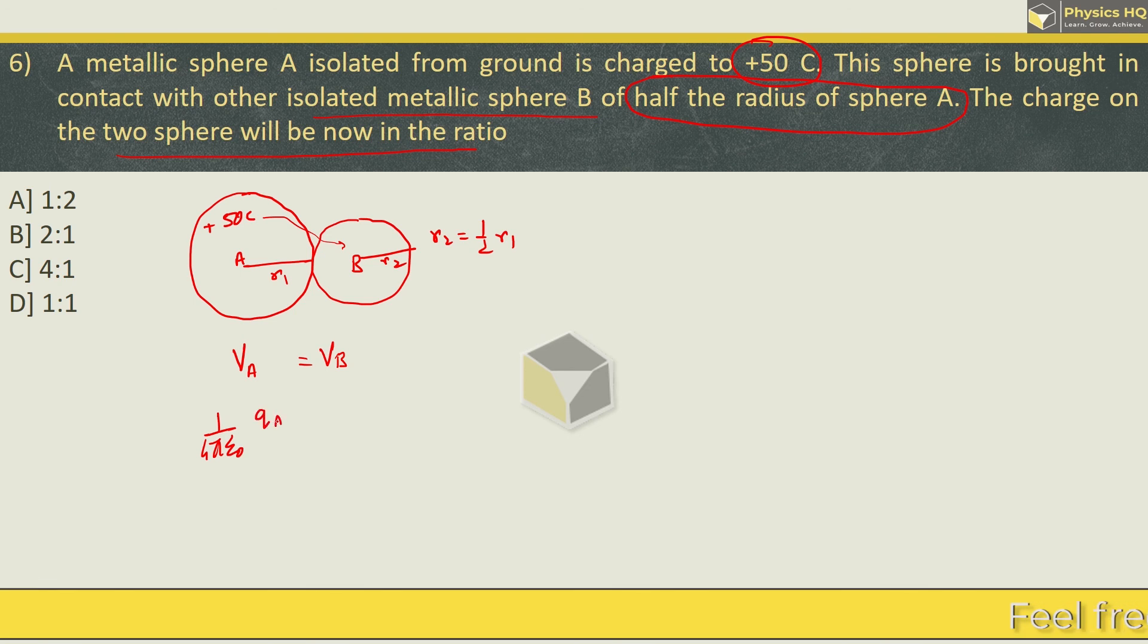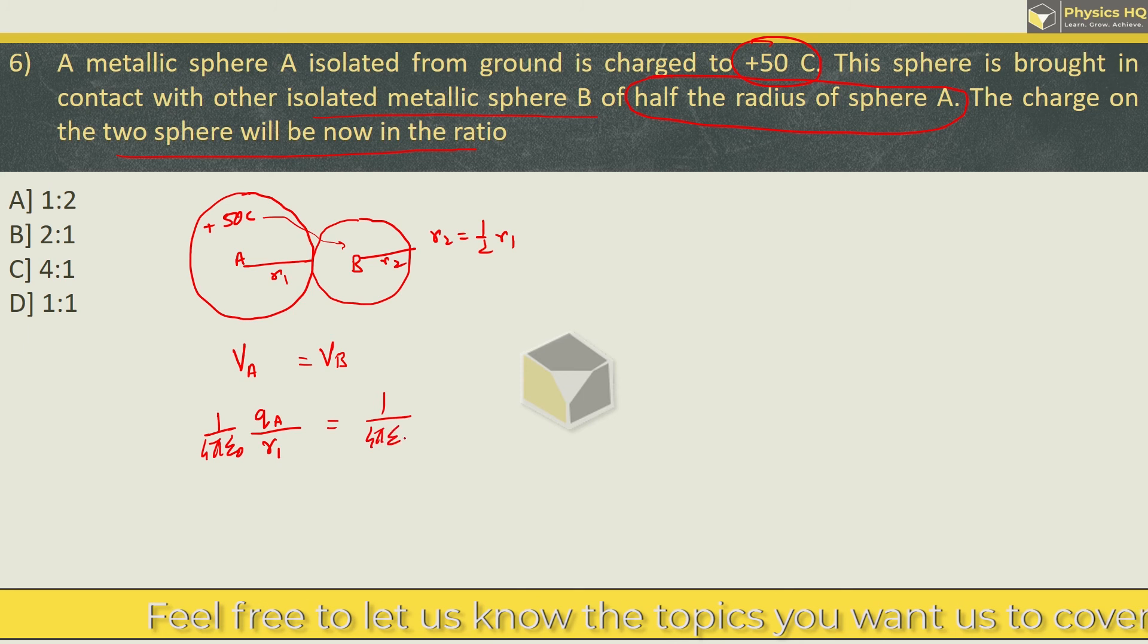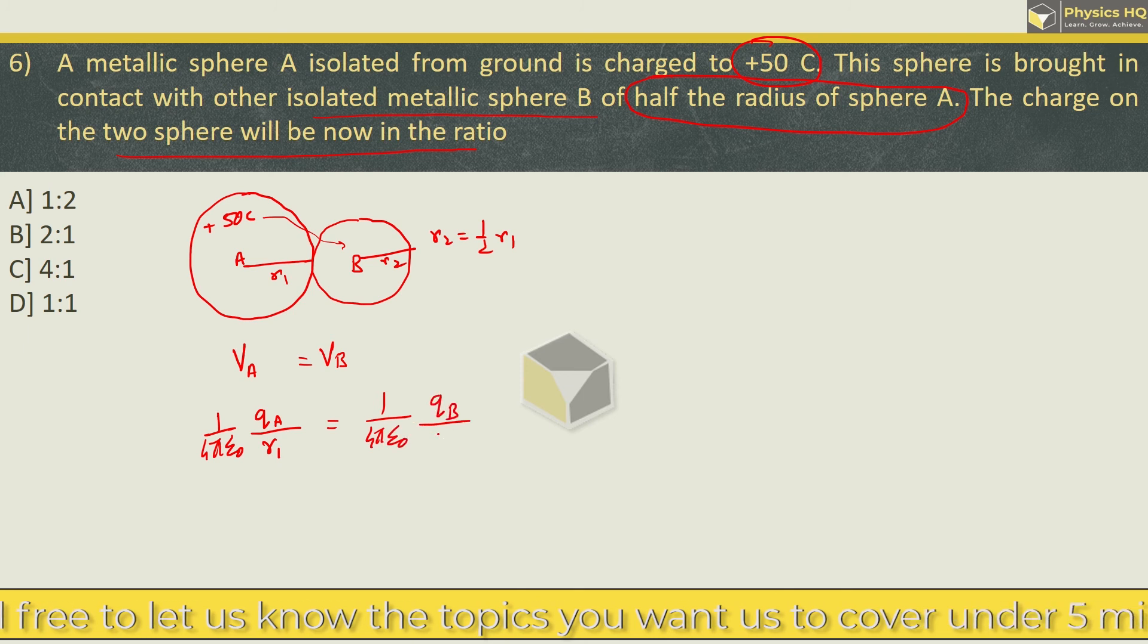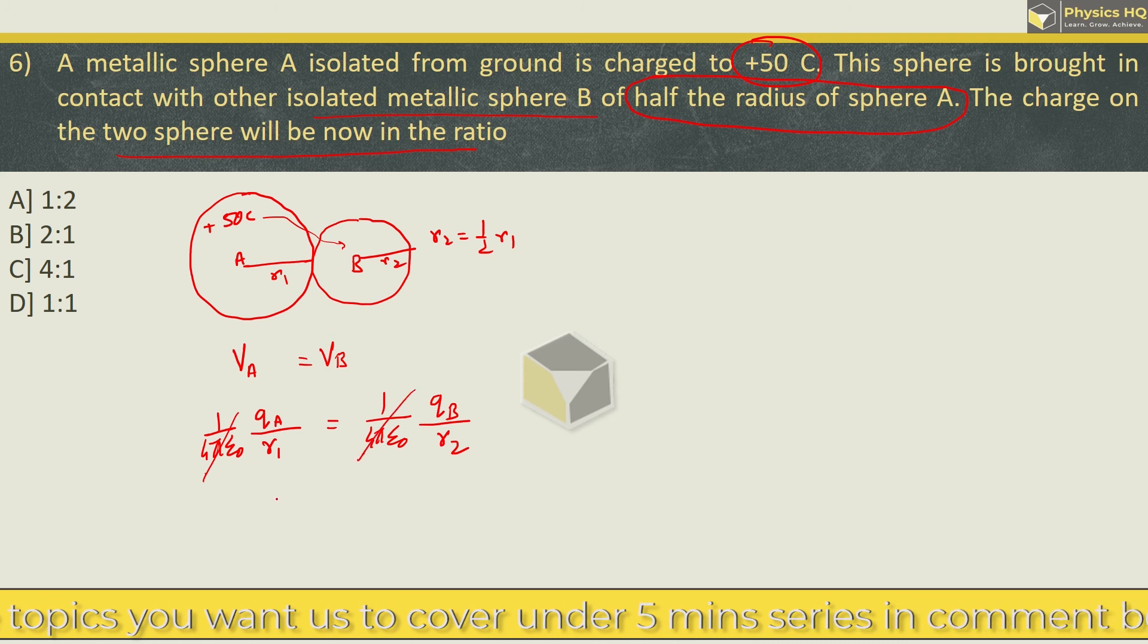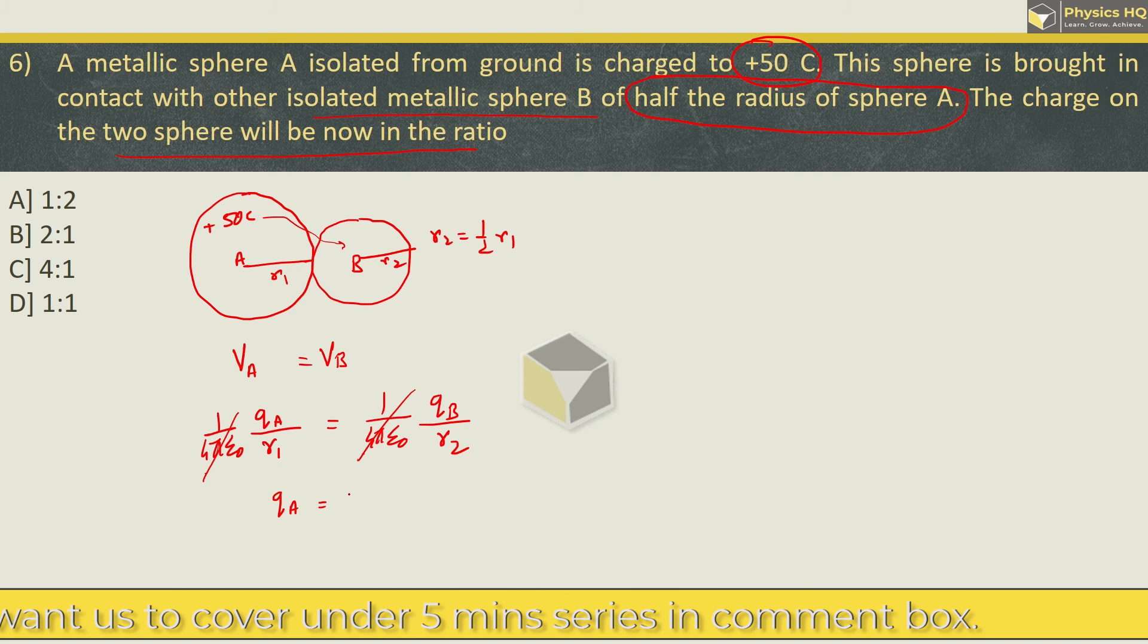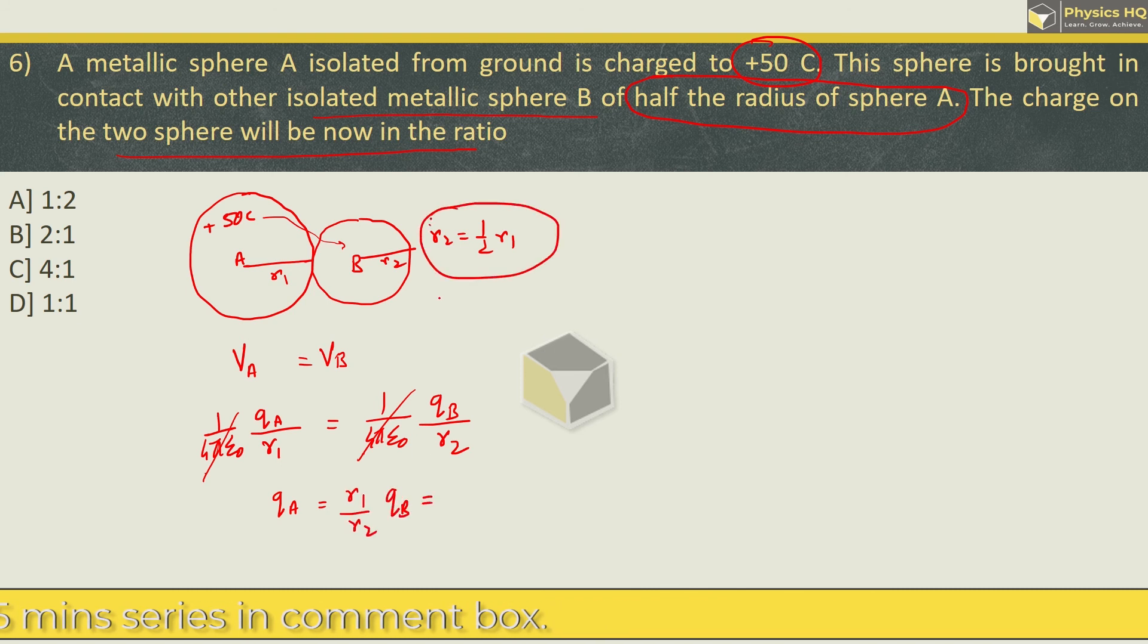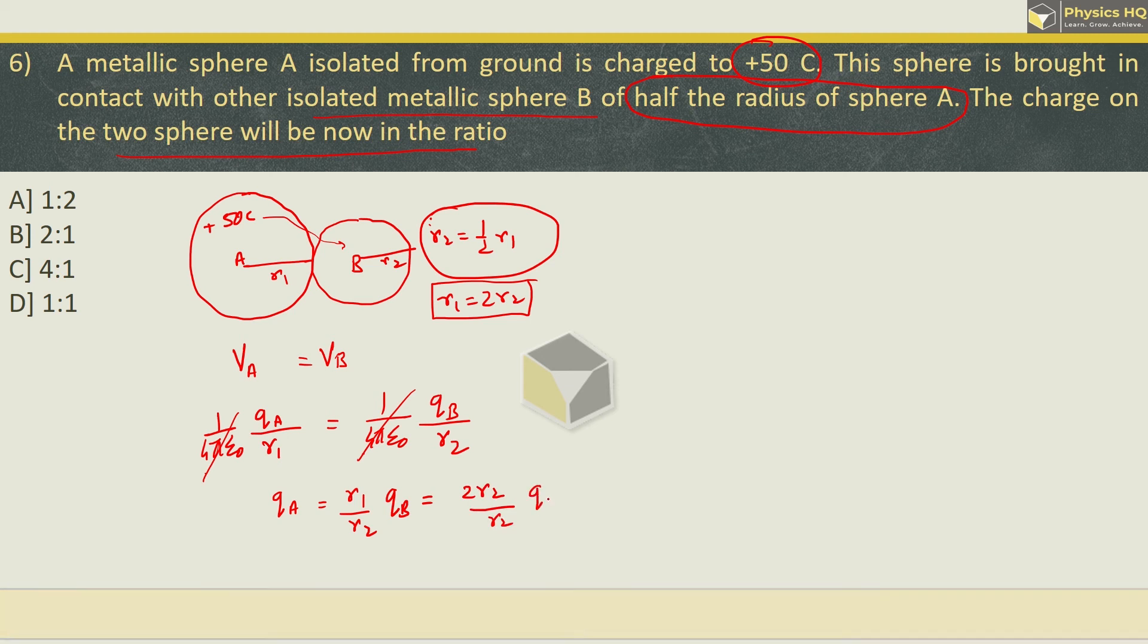So potential formula: 1 upon 4 pi epsilon naught charge on A divided by radius r1, this equals 1 upon 4 pi epsilon naught charge on B divided by r2. We have 1 upon 4 pi epsilon naught in both cases, it cancels. And we are left with qA equals r1 upon r2 into qB.